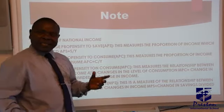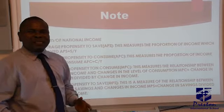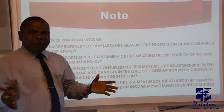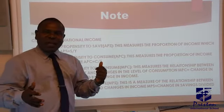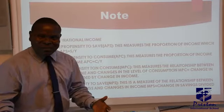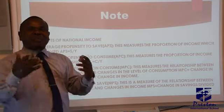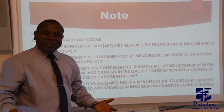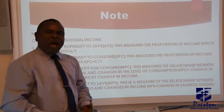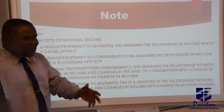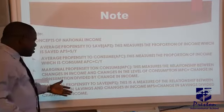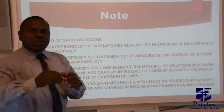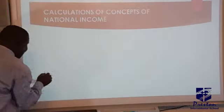Then we go to MPC — marginal propensity to consume. It is talking about the difference. For instance, you were earning 50,000 naira before, and now your income has increased to 100,000 naira. We expect you as a rational consumer to increase your level of consumption as well. That increase gives us MPC, marginal propensity to consume. The last one is MPS — marginal propensity to save. I will give short examples on this in our next page.